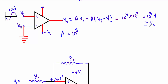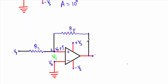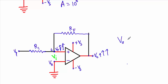Now consider positive feedback, where the output is directly connected back to the positive terminal. Applying a voltage V1 at the non-inverting terminal increases the output voltage, and some portion of this increased output is fed back to the non-inverting terminal. This further increases VP, which further increases the output, and this continues until the output reaches the positive saturation voltage.